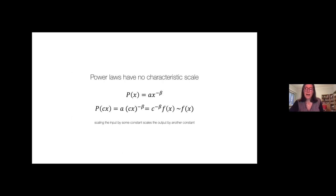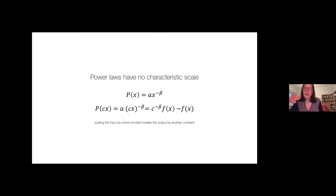Power laws are well known as scaling laws because they do not have a characteristic scale. When you scale the input of the function by a given value c, so P(c·x) = constant × P(x), it means there is no characteristic scale — we can look at this function for any value of x and the shape of the distribution remains the same.